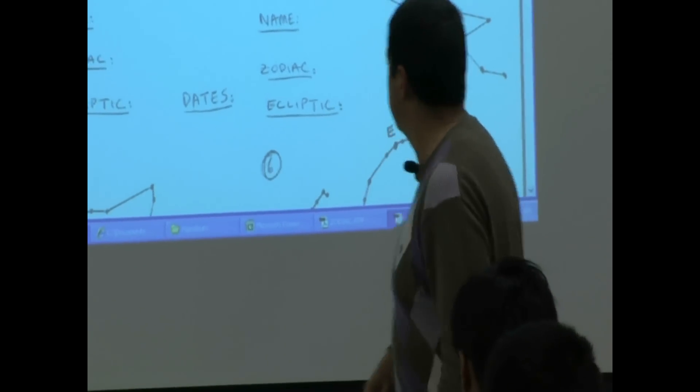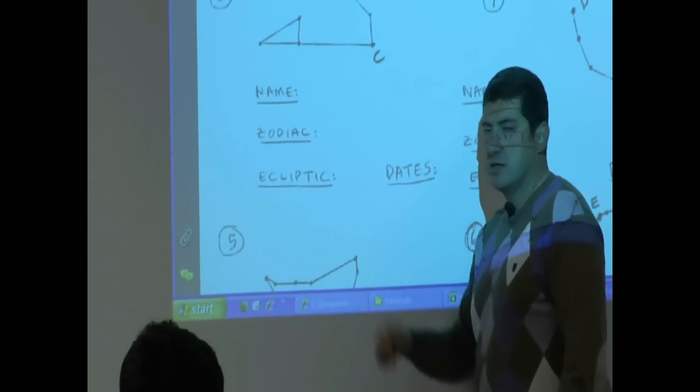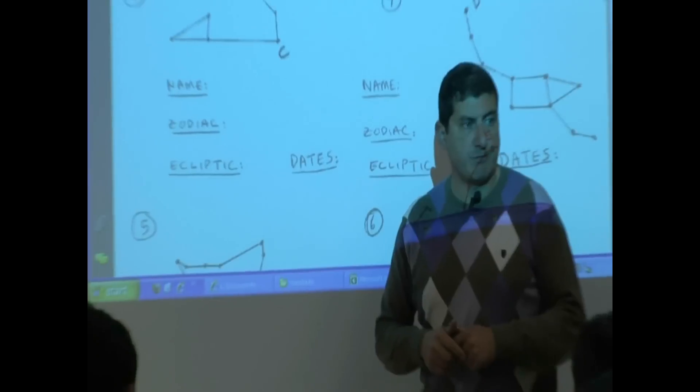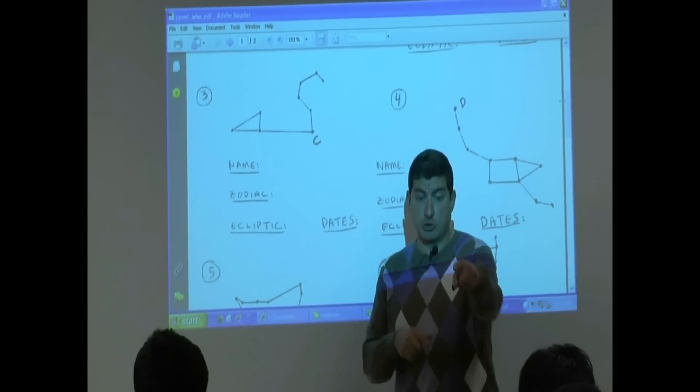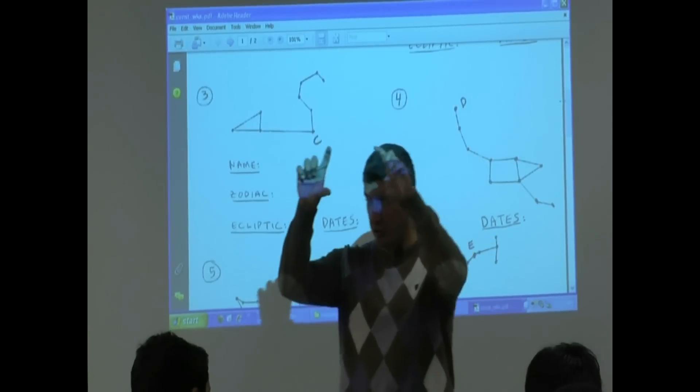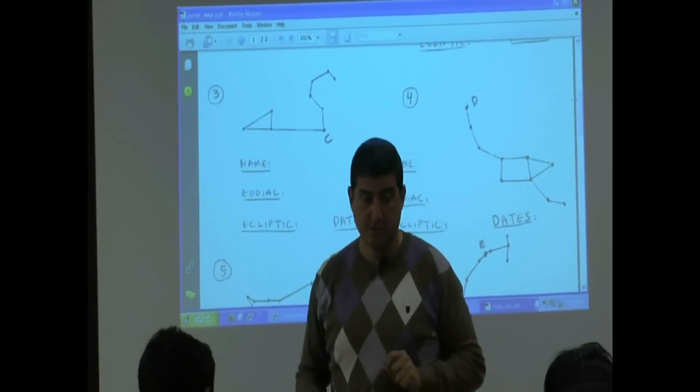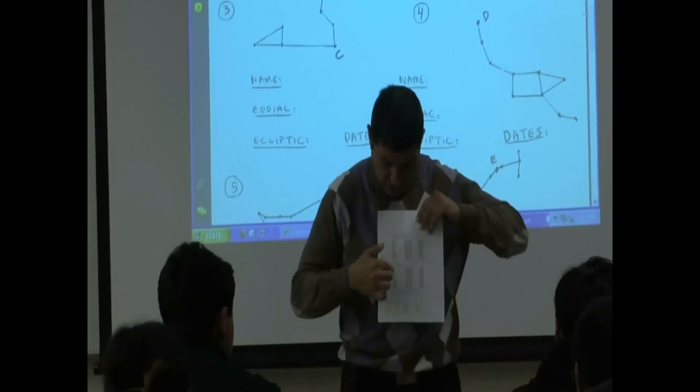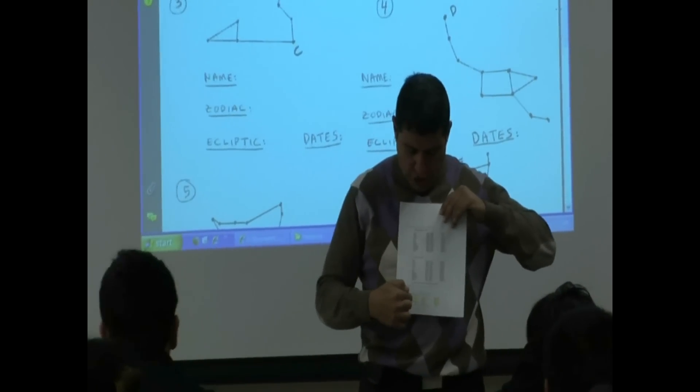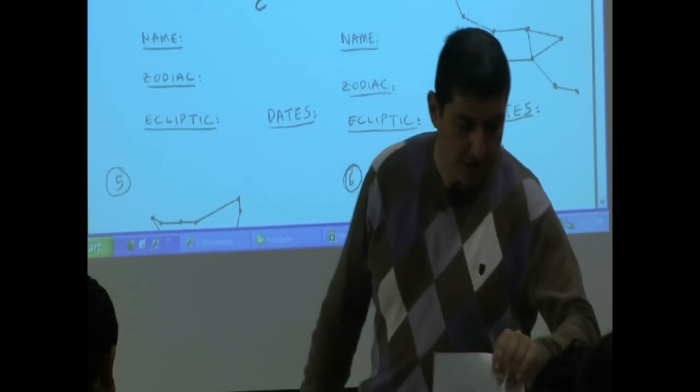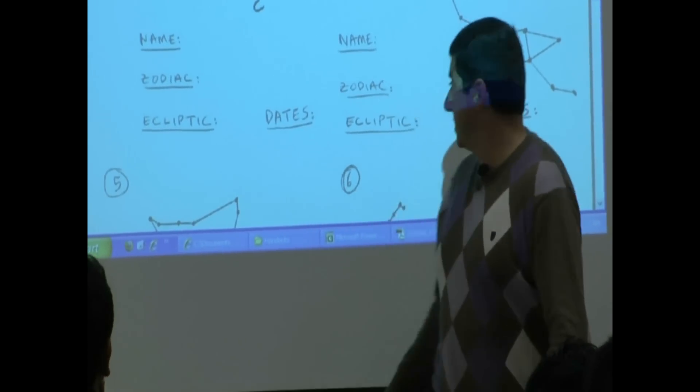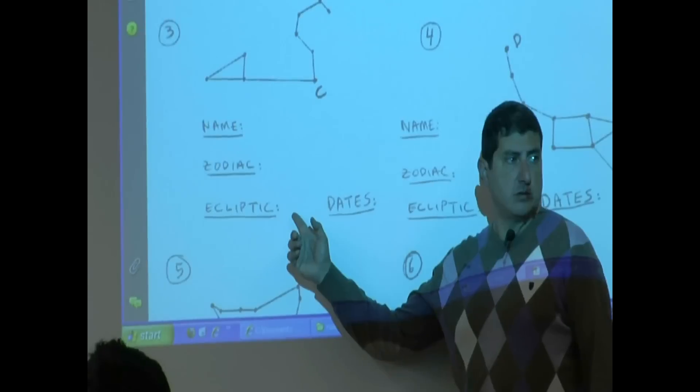Next to ecliptic - is that constellation part of the constellations of the ecliptic? So basically you're looking at the same sheet but you're looking at the 13, the list of the 13 here. So for zodiac you're looking down here, for ecliptic you're looking here. And then what do I want you to put? Yes or no again. Is it part of the 13?